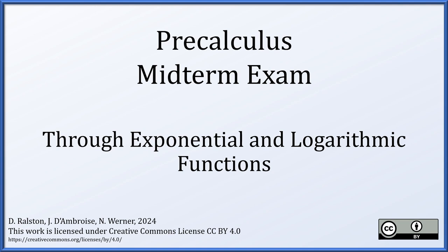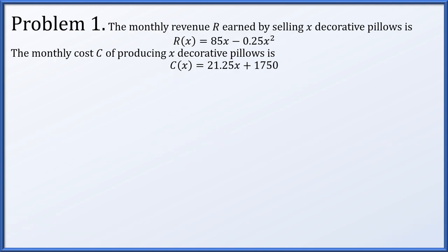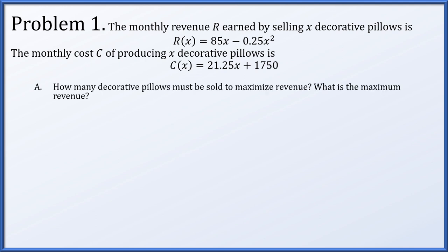Problem one: the monthly revenue earned by selling x decorative pillows is given by r(x) = 85x − 0.25x². The cost of producing that many pillows is c(x) = 21.25x + 1750. First, we are asked how many pillows must we sell to maximize revenue. Rearranging terms, the revenue function is a quadratic in standard form: −0.25x² + 85x + 0.